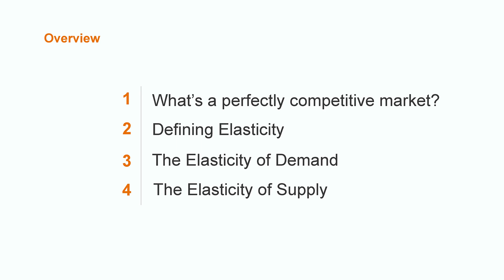In order to do so, we're going to start by defining the concept of a perfectly competitive market. Then we will address elasticity and the use of relative indicators. This will allow us to develop the concepts of elasticity of demand and elasticity of supply, as well as their different types. With this content you'll be able to understand how demand and supply respond to changes in other variables, mainly price.